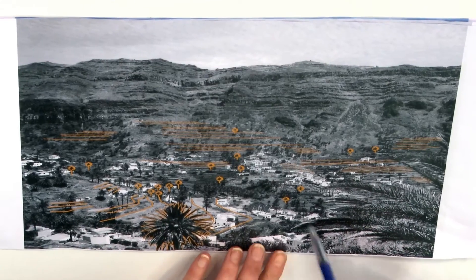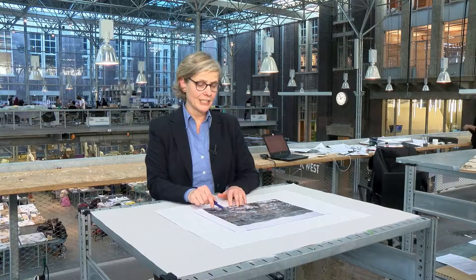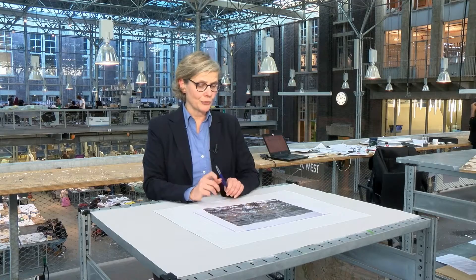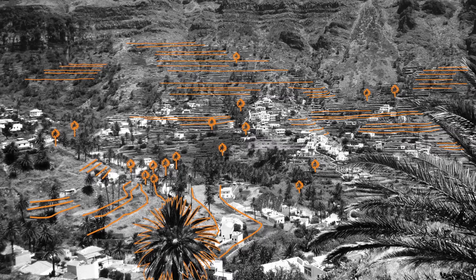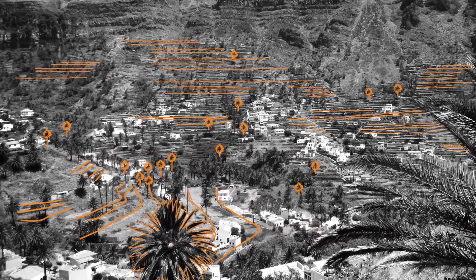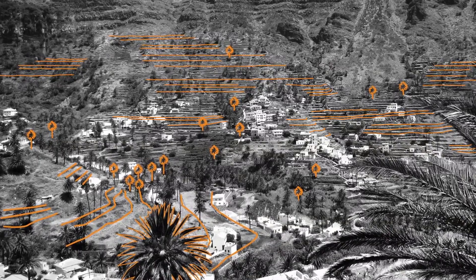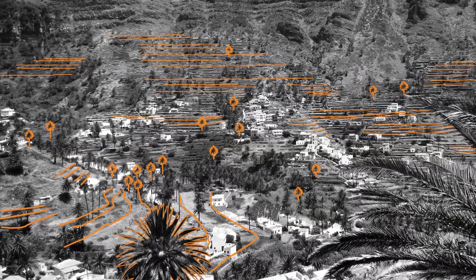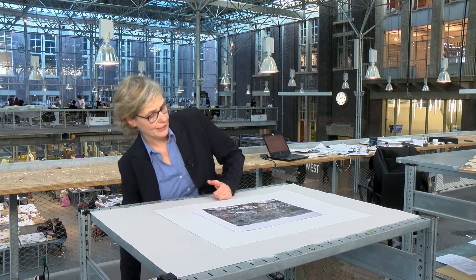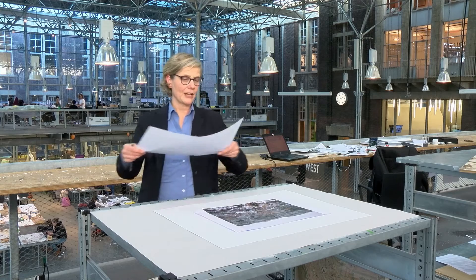Next to the natural landscape, I can point out the cultural layer in this image. You can see terraces built into the hillside and palm trees providing shade for the crops growing on those terraces.